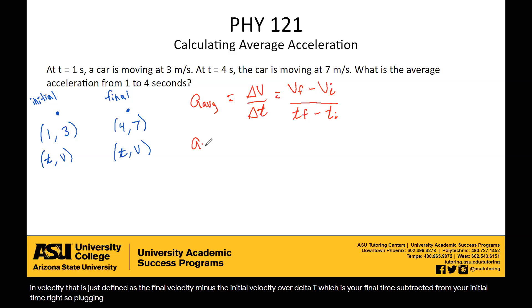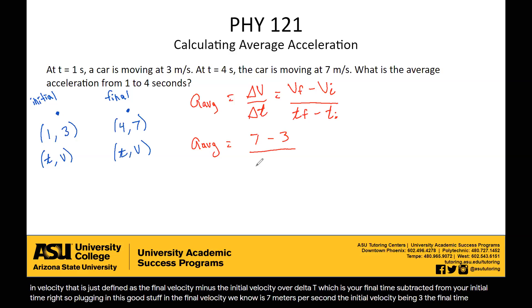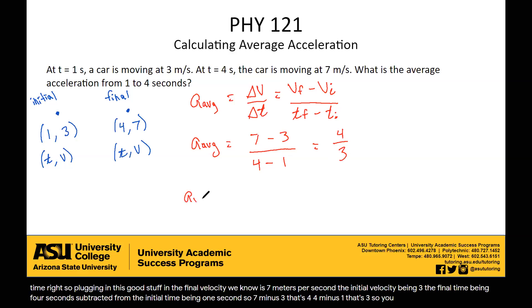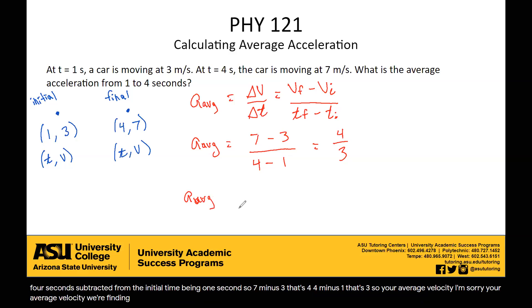Plugging in: the final velocity we know is seven meters per second, the initial velocity being three. The final time being four seconds, subtracted from the initial time being one second. So seven minus three is four, four minus one is three. The average acceleration is four thirds, which is about 1.3 meters per second squared.